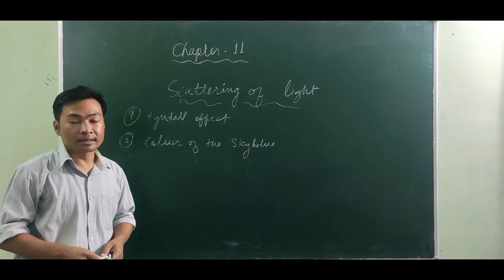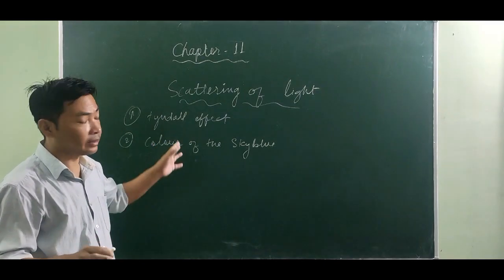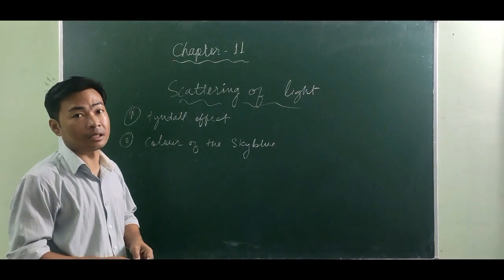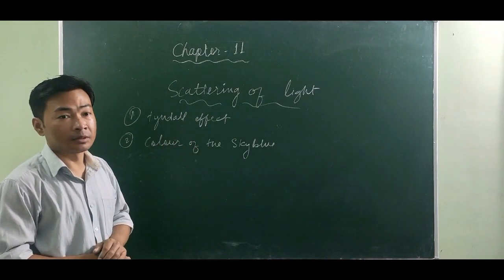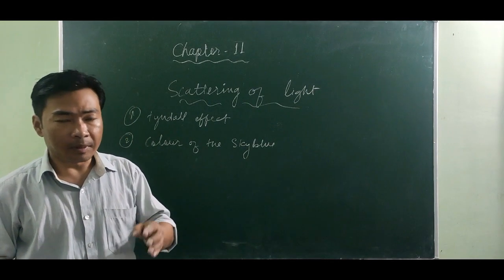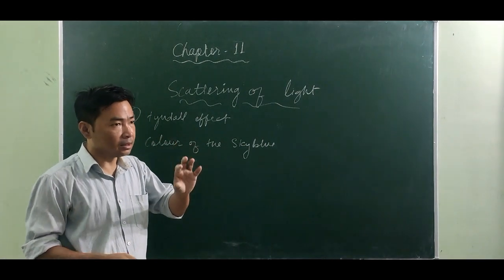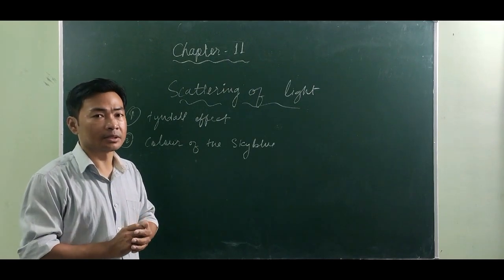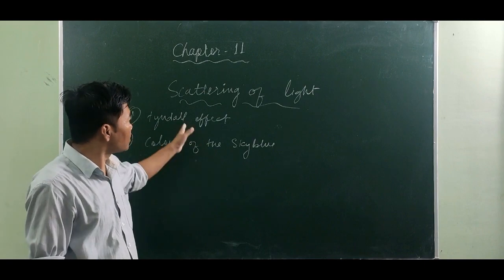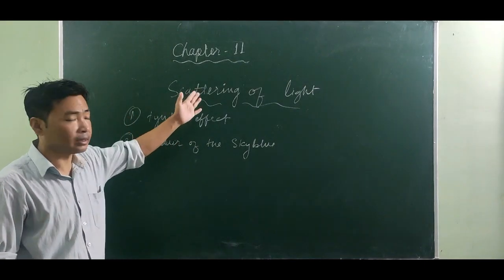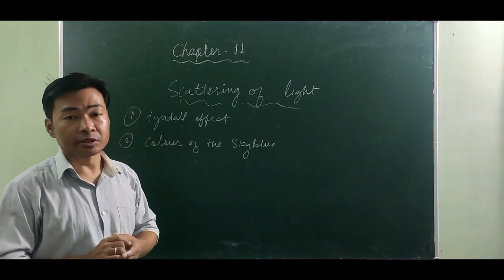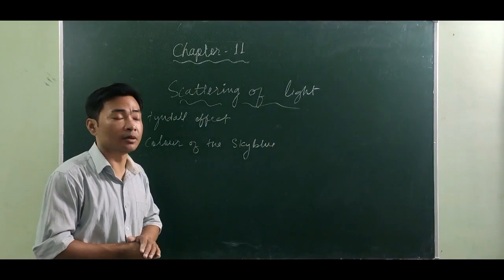Scattering of light is the phenomenon in which light rays are deviated by obstacles like dust particles, air molecules, water vapors, and other particles present in the atmosphere. When a light ray hits these tiny particles, it scatters the light ray in all directions - this is known as scattering of light. Some examples of scattering of light are the Tyndall effect and the color of the sky appearing blue - all these natural phenomena occur because of the scattering of light rays.